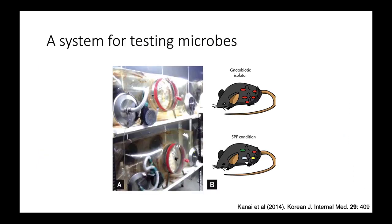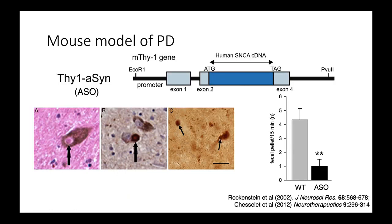Luckily, there's a model system that helps us test for this. There's the idea of gnotobiotic, or germ-free, mice — mice that live in a bubble with no bacteria — and you can introduce new bacteria to these mice to see what effect different kinds of bacteria have. You could introduce a single bacterium or a whole community. There is also a mouse model of Parkinson's disease that overexpresses a gene associated with Parkinson's disease, leading to a Parkinson's-like phenotype that can then be used in studies.